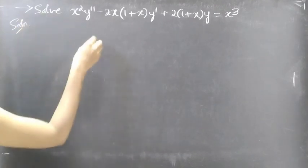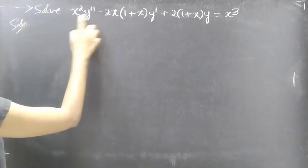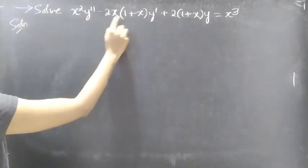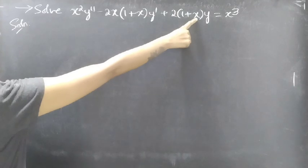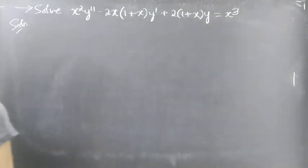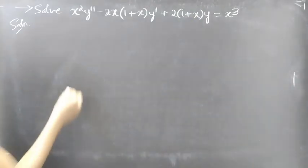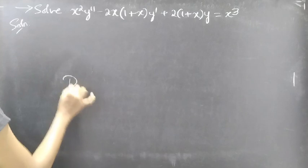So we are given a differential equation with variable coefficients, and we are going to use the reduction of order method.